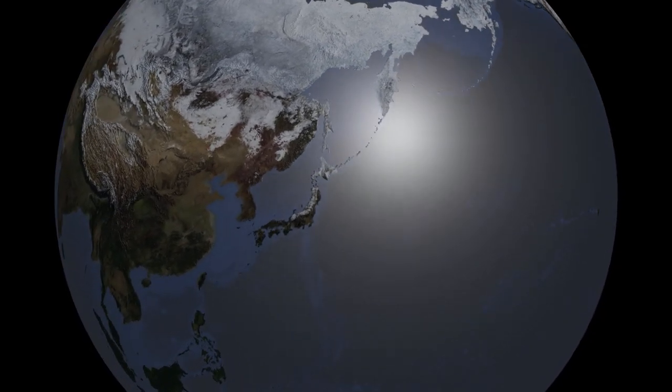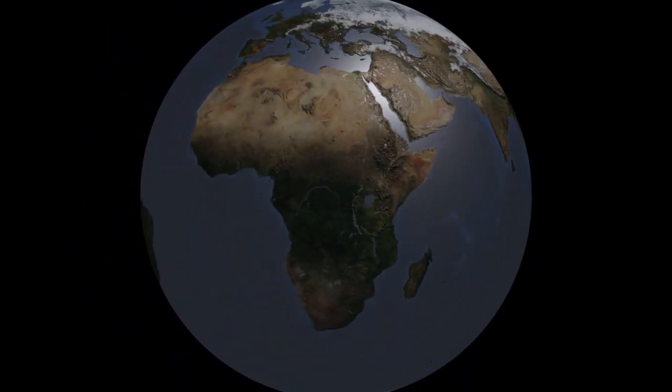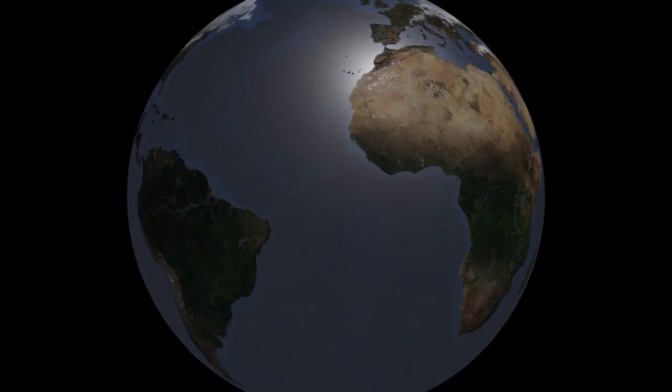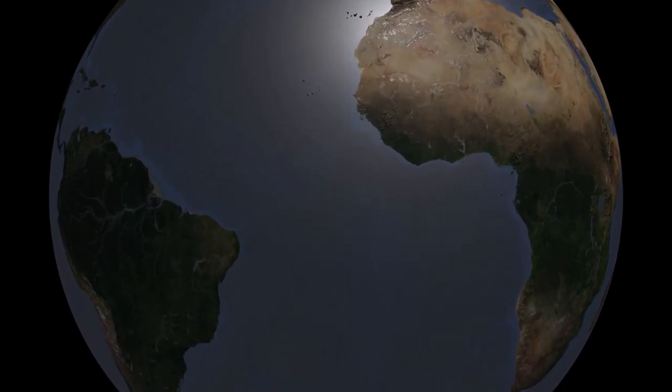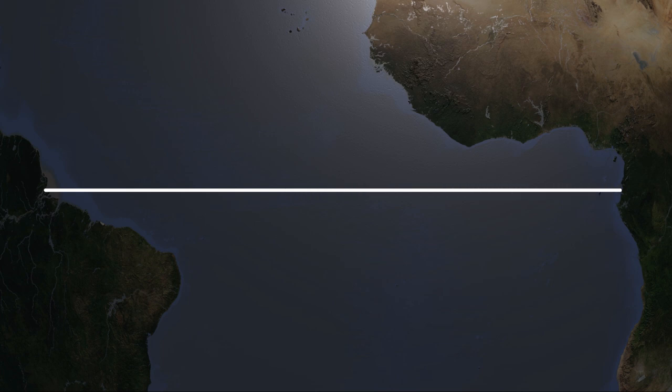We all know the shape of the earth is spherical. To be a little more precise, it's an oblate spheroid, but for simplicity we'll just assume it's a sphere. If you take two points on the equator, it's pretty obvious that the shortest route is to travel straight along the equator itself.